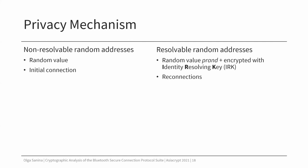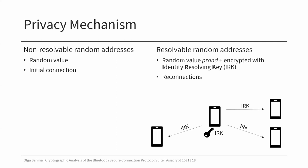In contrast, resolvable addresses consist of some random value prand, which is concatenated to a ciphertext. This ciphertext is derived from the prand encrypted with the identity-resolving key. To resolve the address, this identity-resolving key must be distributed to the device, therefore this type of address can be used only in reconnections. The identity-resolving key is unique for the device, and the same key is distributed among all the devices with which the initial device is bonding. But if there is an adversary among these devices, then the identity-resolving key is compromised for all of the connections.